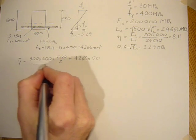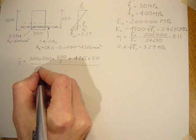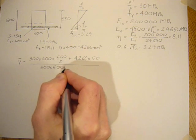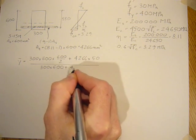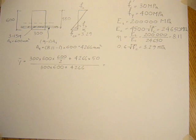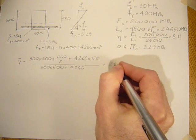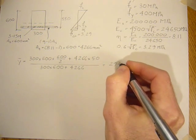And then you divide by the areas: 300 times 600 plus 4,266. Over 2 plus 4,266 times 50 divided by 300 times 600 plus 4,266. That comes out to be 294.2 mm.